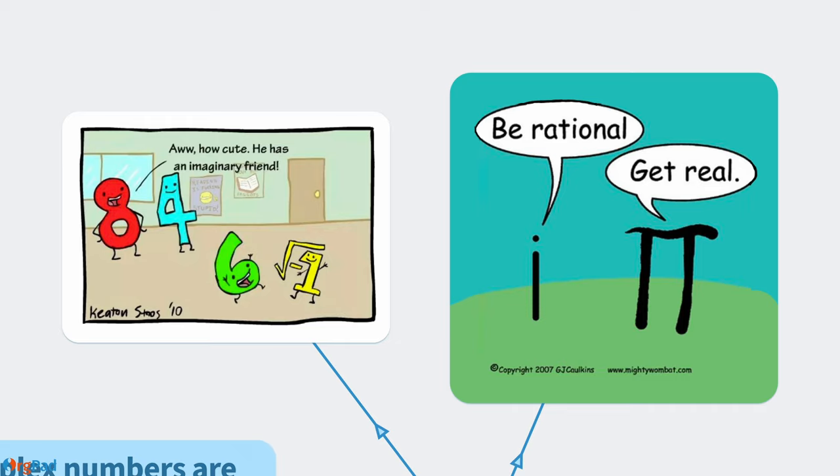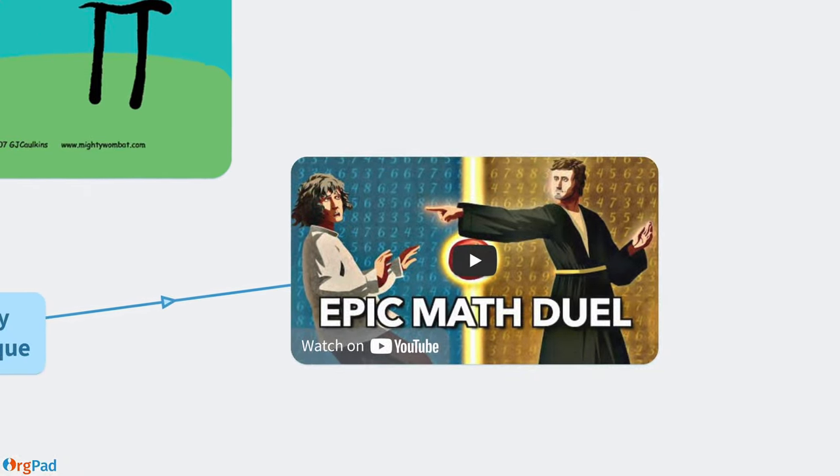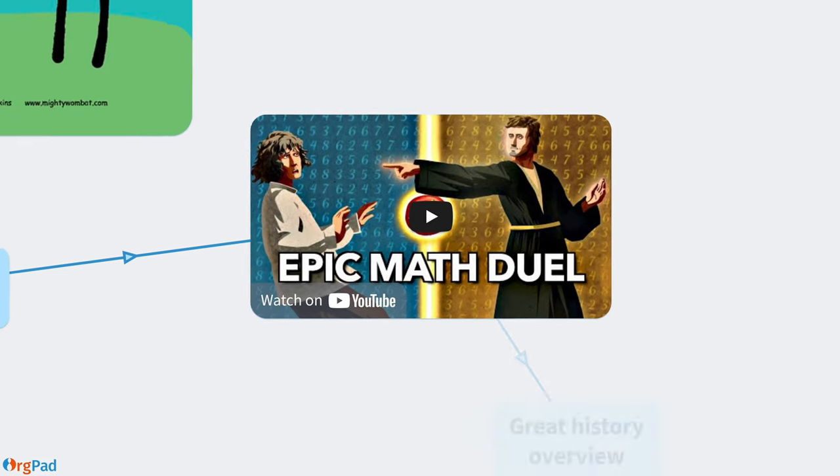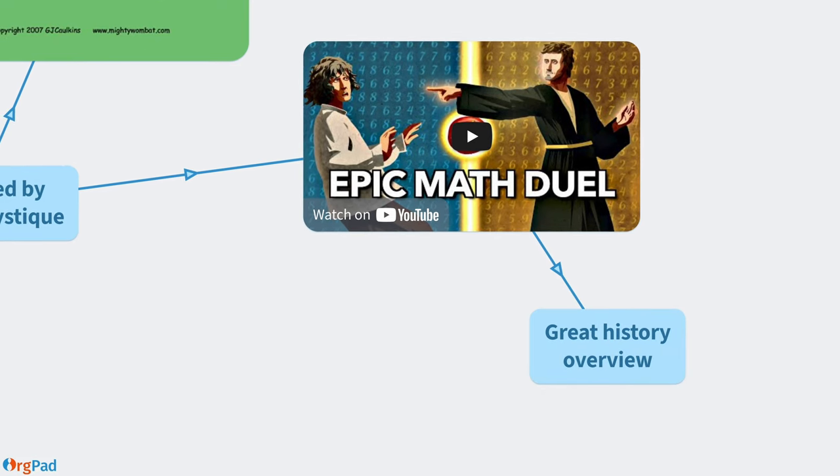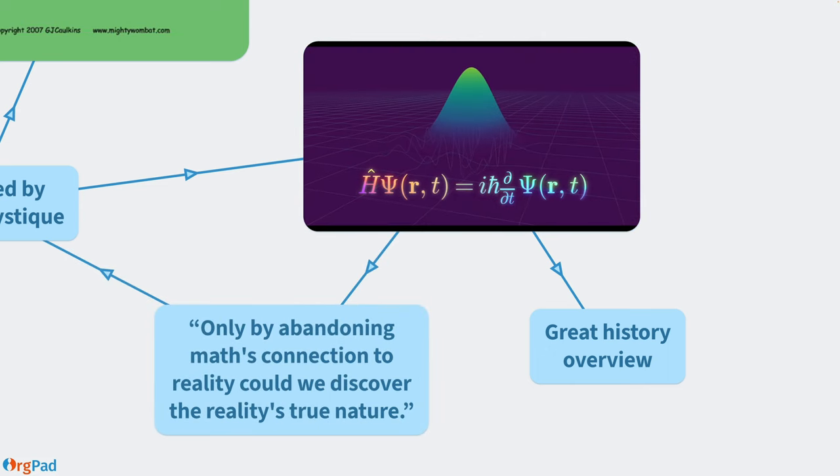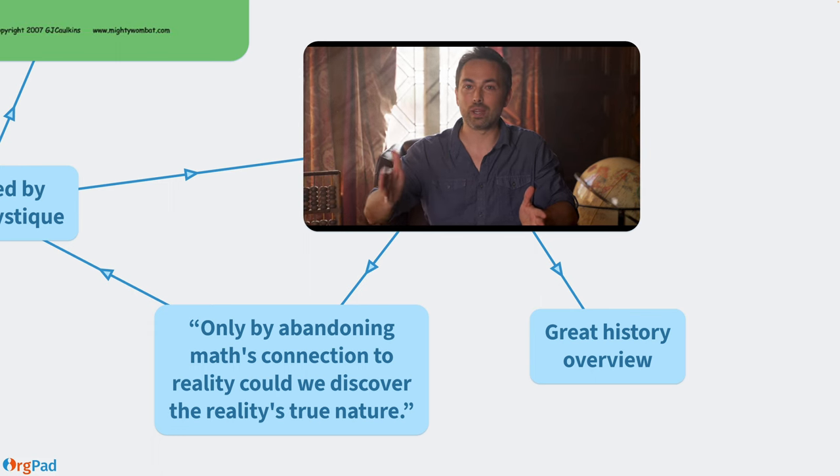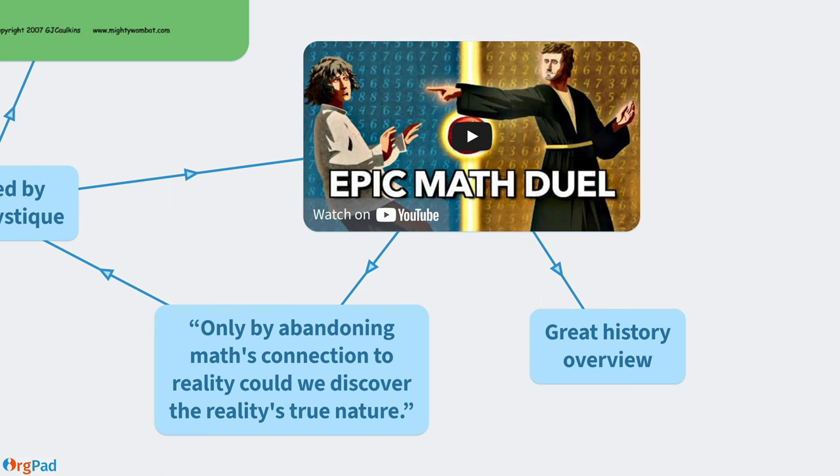It makes me sad since mathematics is full of the most amazing ideas. Unfortunately, they remain hidden. Jokes aside, Veritasium made this video about complex numbers. While it beautifully explains the history, it also contains some weird statements like this one. Only by abandoning math's connection to reality could we discover reality's true nature. What nonsense.